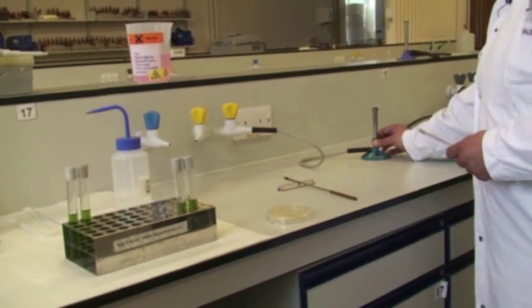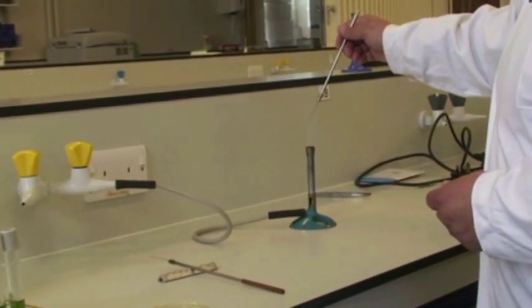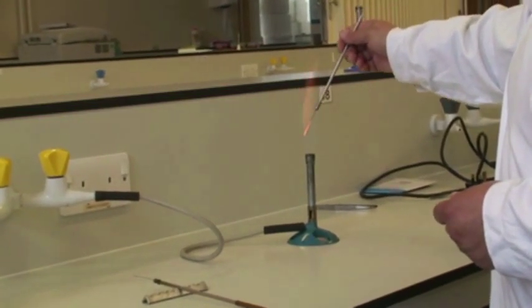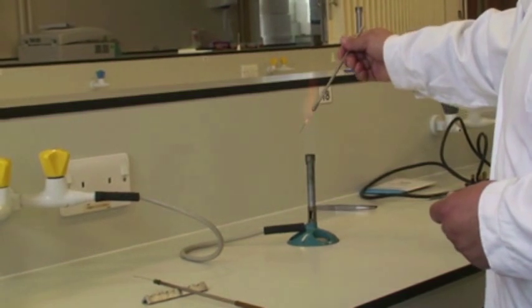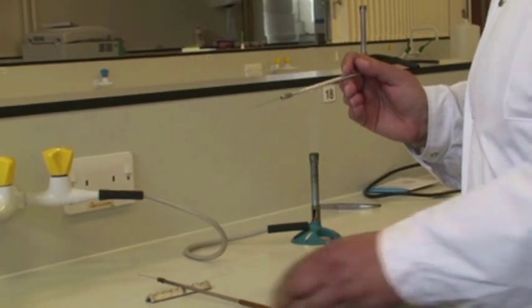I'm moving the Bunsen again to the hottest part of the flame, sterilizing the straight wire till it's red hot, because you want to make sure that the only bacteria you are actually inoculating into those Hugh and Leifson's agar media are just the bacterium that's on here.